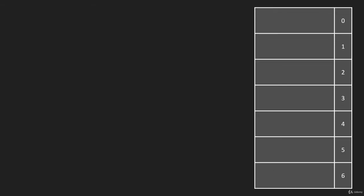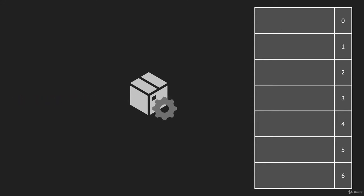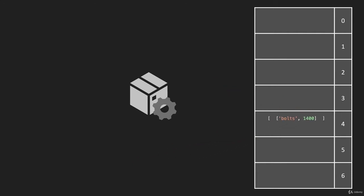Now we're going to do our set method for our hash tables. We'll bring up this address space and our hash function, and then we'll set an item. In this case, the key 'bolts' is going to get run through our hash function, and it's going to produce the number 4. Our set method is going to produce this array with the key and the value, and we're going to put that at address 4. Now let's get into the code.